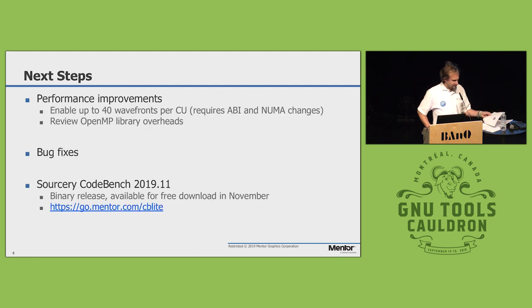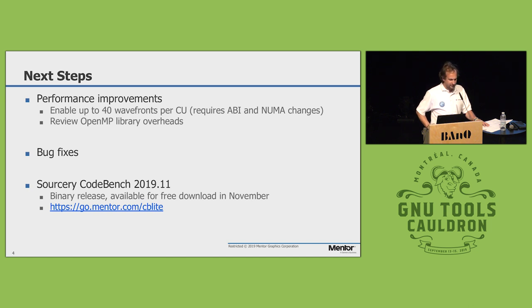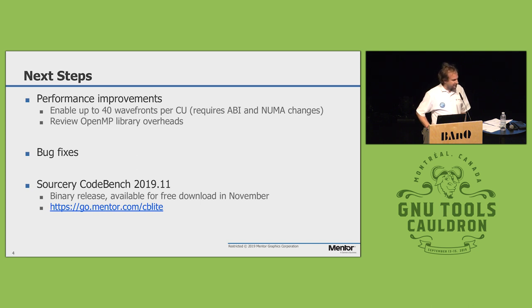Next steps the team intends to work on are performance improvements to enable more wavefronts being used, and reducing the overhead of OpenMP offloading, because a lot of execution time is apparently spent in the runtime library before you actually get to run your user code in parallel. Andrew mentioned that especially if you use a lot of teams and work groups, that overhead is noticeable — there are some global locks and similar issues to avoid. There are also some ABI changes planned to better use the general purpose registers and make better use of the GPU hardware.